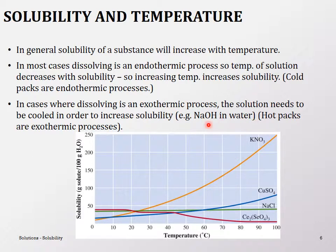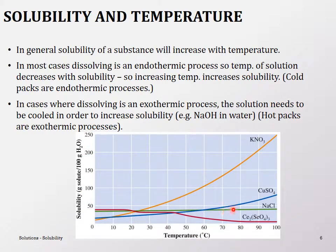A classic example of an exothermic dissolving process is sodium hydroxide in water. When making a concentrated NaOH solution, the process is highly exothermic — the flask or beaker gets very hot. To increase the solubility of NaOH, you must cool it in a water bath or ice bath, not heat it. The solubility graph shows how for most substances solubility increases with temperature. Very few substances show decreasing solubility with temperature, which indicates an exothermic dissolving process.